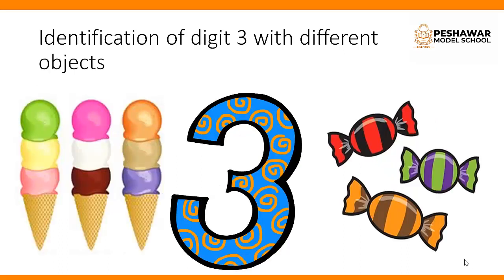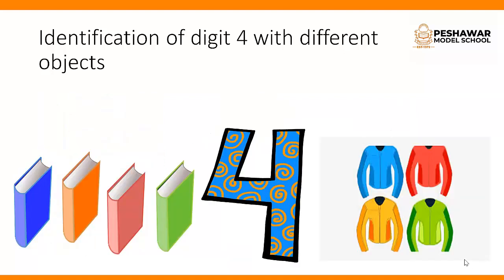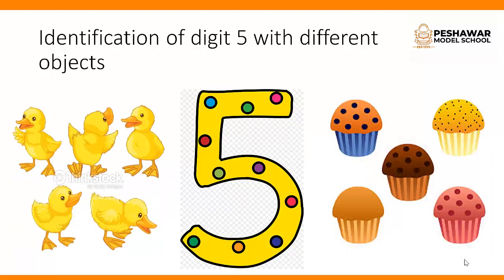Next number is 3. Here we have 3 candies and 3 ice creams which describes the value of 3. Next number is 4. Here we have 4 colorful jackets and 4 books which shows the value of 4. Next number is 5. Here we have 5 cupcakes and 5 chickies which shows the value of 5.